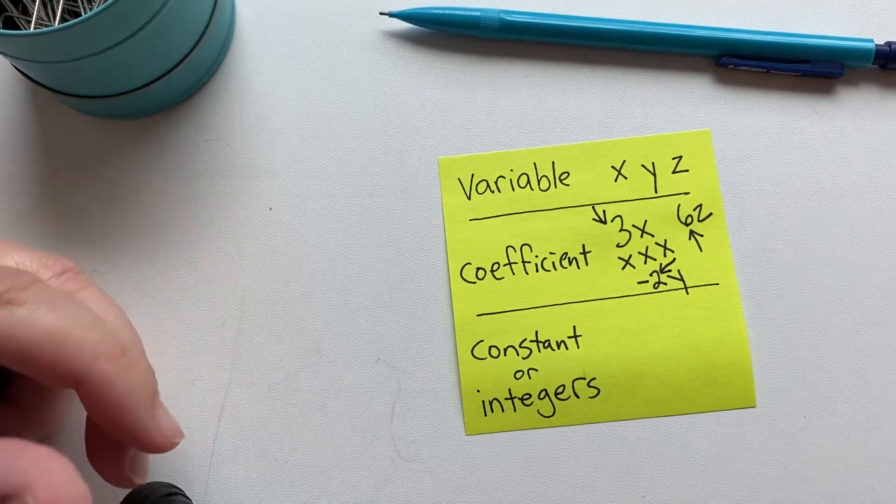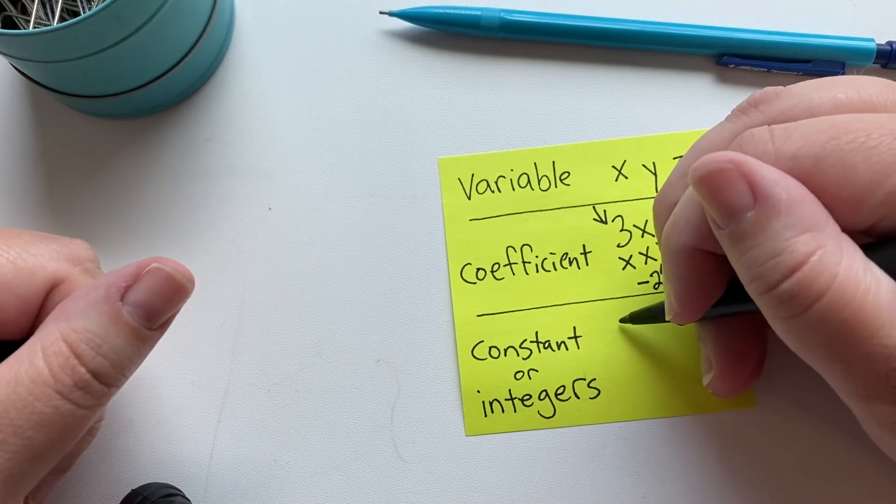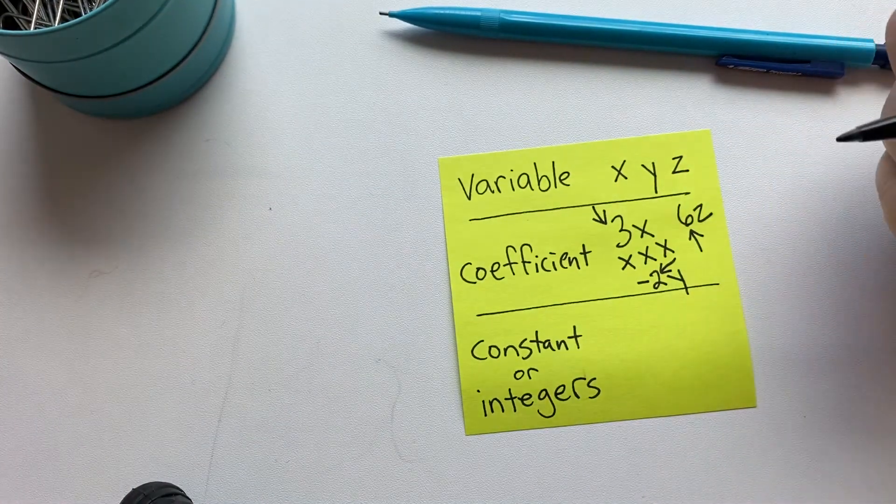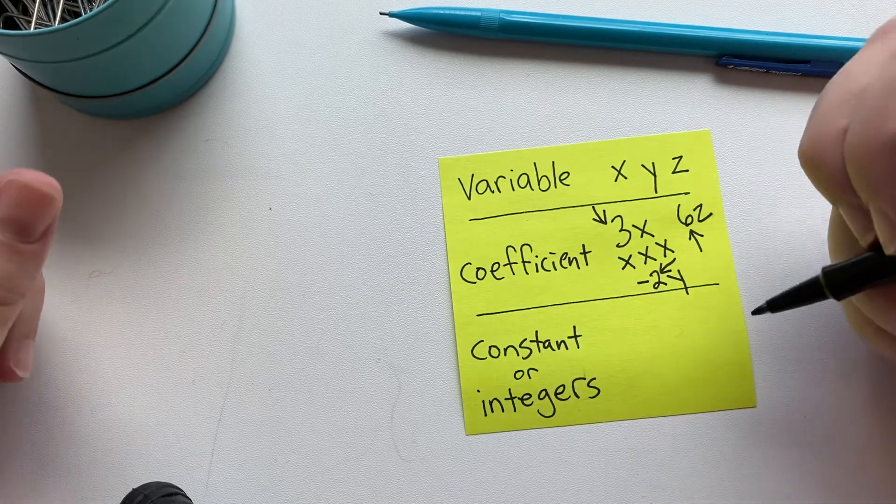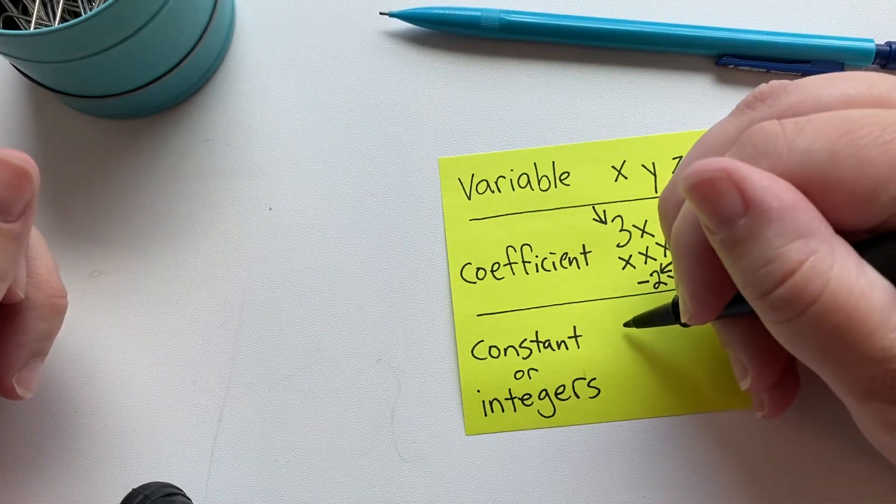And then we have our constant or integers, which we're mostly going to be using integers in this case. In the lessons we're only going to be using integers, but integers are positive and negative whole numbers.